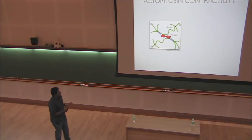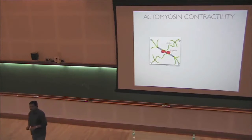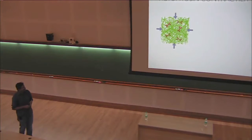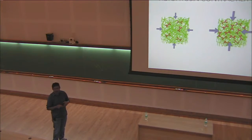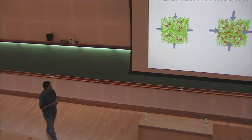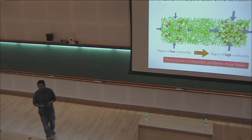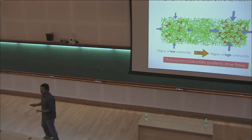A simple picture: if you have an actomyosin system with motor proteins working on filaments, a patch of actin and myosin will on average want to contract. A patch with higher motor protein density will contract with higher velocity. Since the cortex is a connected segment, a gradient in motor density gives rise to flow. So if you have actomyosin contractility with a gradient in that contractility, that is how you generate hydrodynamic flow.